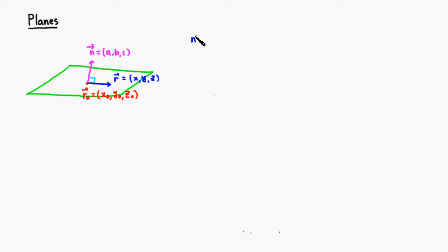We have vector n, the normal vector, take the dot product with r minus r0. All right, and this is going to be equal to zero since we know that vector n, which is the normal vector, is perpendicular to a vector r minus r0. So if you write the components, you're gonna get a, b, c